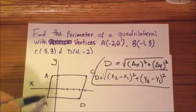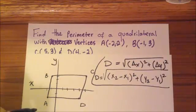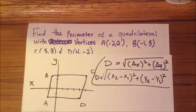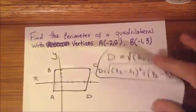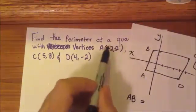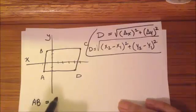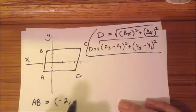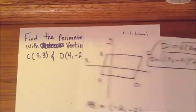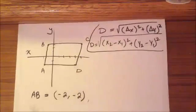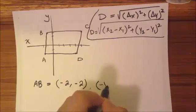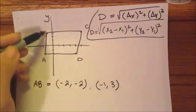We can pick the points for AB. So we have line AB right there. AB starts from point A, and the coordinate for point A is negative 2, negative 2. For point B, we have negative 1 and 3.